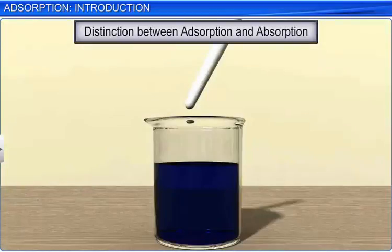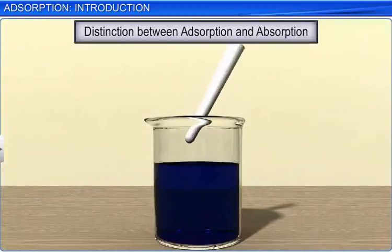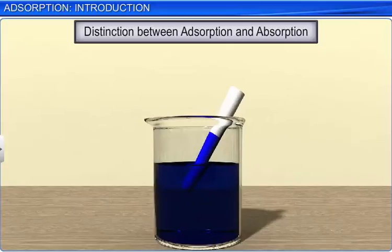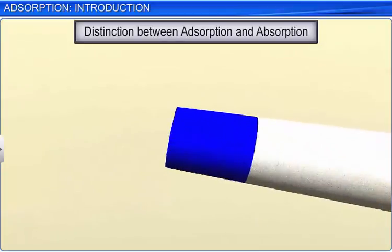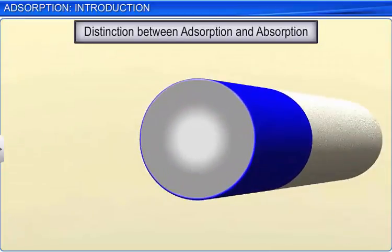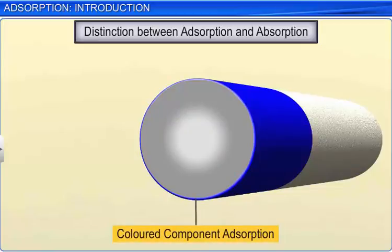Let us understand this difference through an example. If a piece of chalk is dipped in a solution of ink and then broken, it is found that the actual pigment, the ink, is present only on the surface of the chalk and has not moved into the bulk of the solid. However, the solvent in which the pigment was present has uniformly passed into the bulk of the solid. Thus, the color component of the ink has undergone adsorption while the solvent has been absorbed by the chalk.